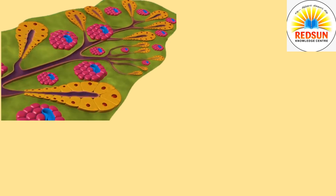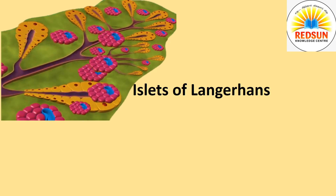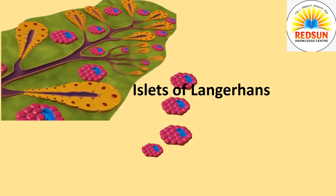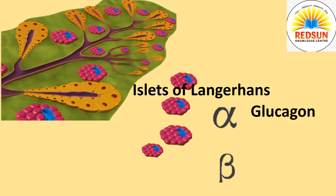The endocrine part of the pancreas consists of islets of Langerhans. There are two types of cells in islets of Langerhans. They are alpha cells and beta cells. The alpha cells secrete glucagon while the beta cells secrete insulin. It plays an important role in maintaining the normal blood glucose level.